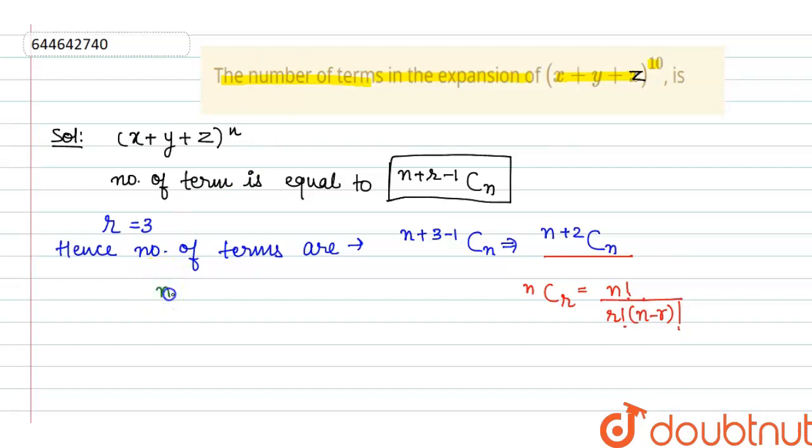So, I can write it, n plus 2 factorial. This is the expansion of n plus 2 C n: n plus 2 factorial, factorial n and factorial 2. Because, n plus 2 minus n is equal to 2 and n will be cancelled or factorial 2 will be remaining.